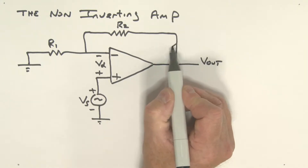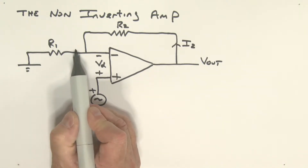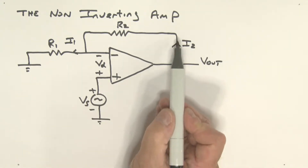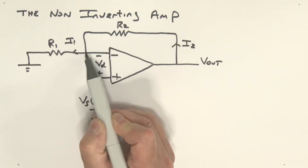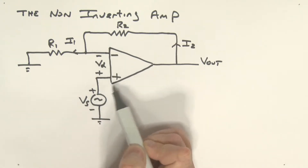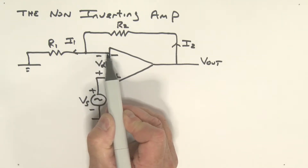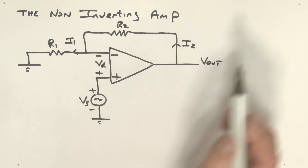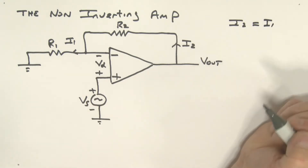Let's define a couple of currents. We're going to call this current I2, and the current going through resistor R1 we'll call I1. I2 flows through resistor R2 and comes to this node. Given that we're assuming an ideal op-amp, the current going into the input is effectively zero. So I2 is equal to I1.